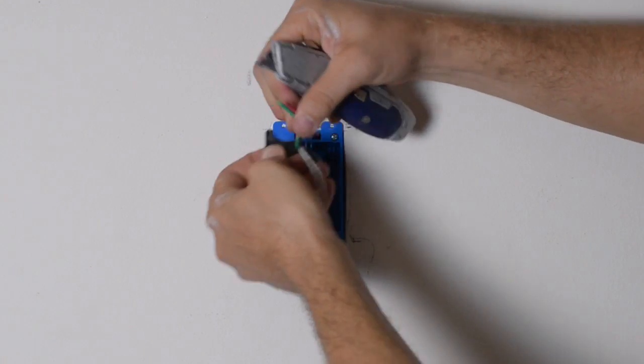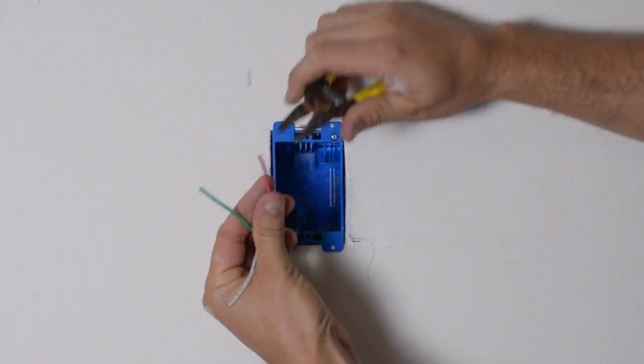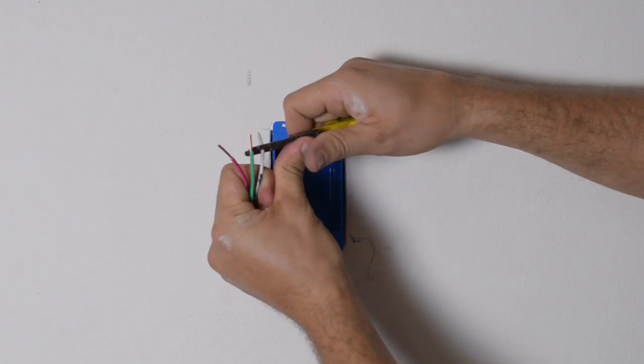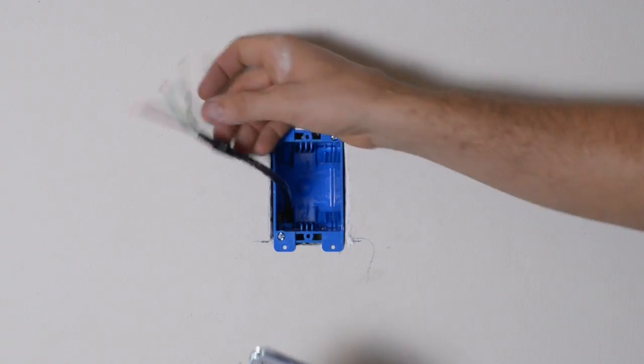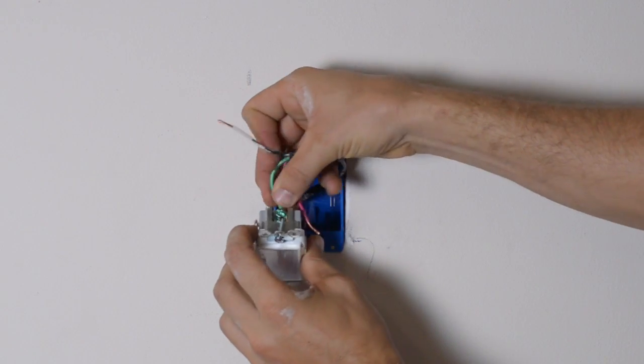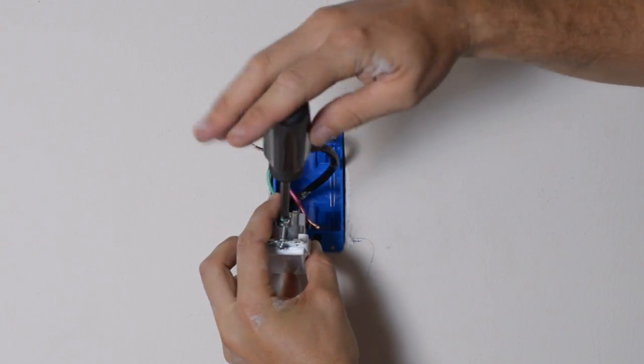Now I'm just giving myself some more slack on my wires here so I can work with them. I'm going to strip the ends off. And then I'm going to install my light, and it's just like an outlet. I'm going to take the ground, put it to the ground screw, screw that down.